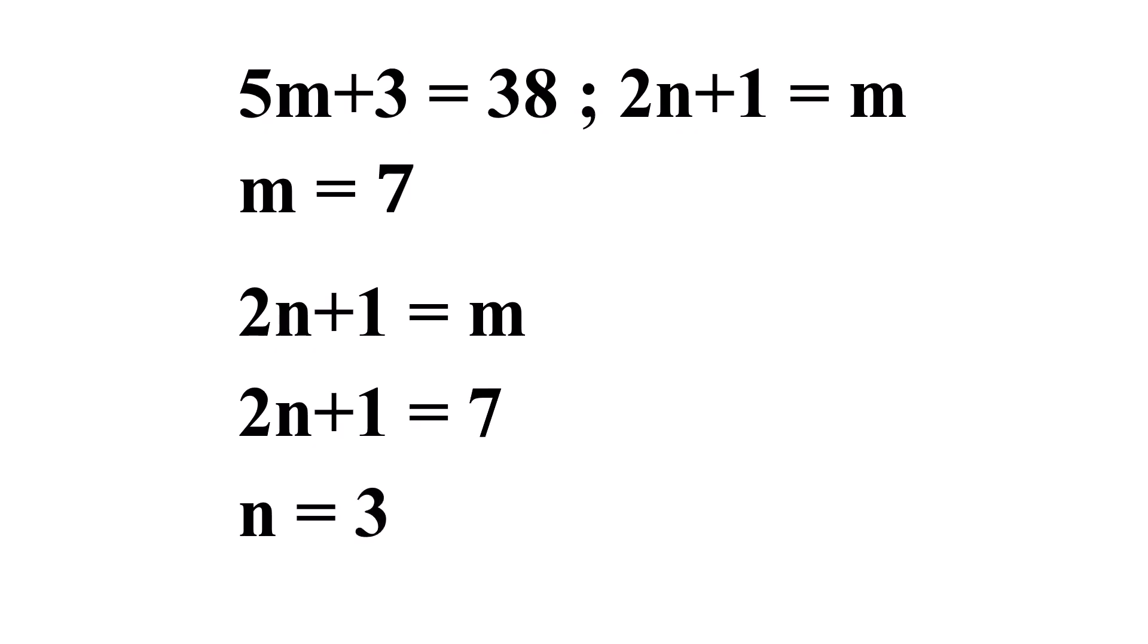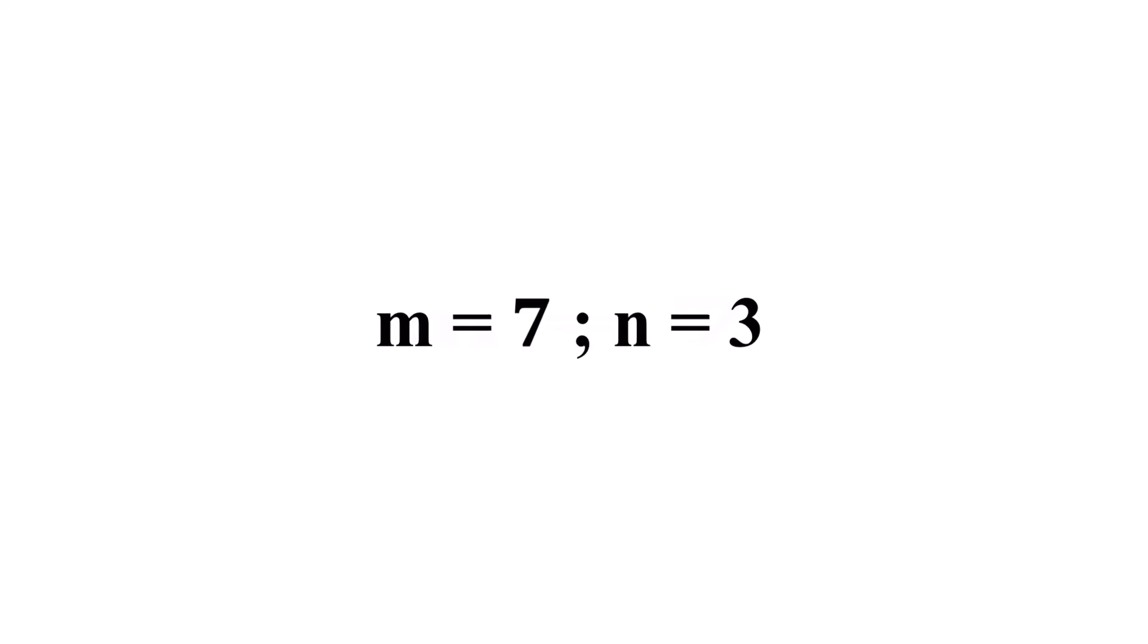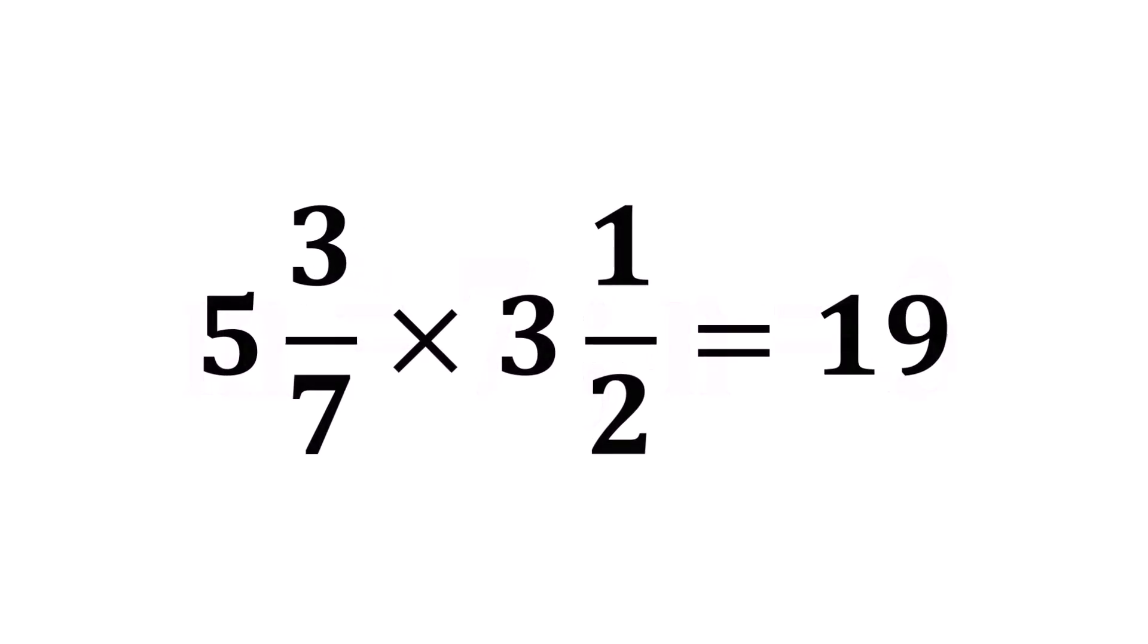Finally, the value of m is 7 and n is 3. Now the equation will be 5 and 3 over 7 multiplied by 3 and 1 half equals 19. And that is our solution.